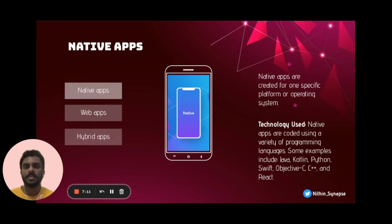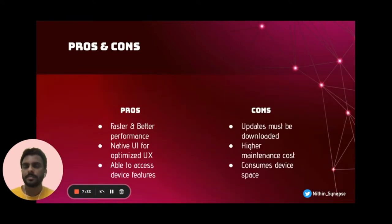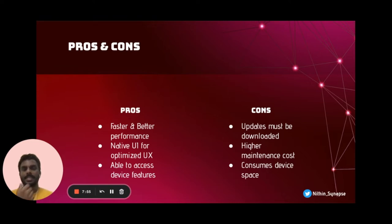Native apps are ones created for one specific platform or operating system. For iOS, the apps we download from the App Store are native apps. For Android, the apps downloaded from the Play Store are native Android applications. One important pro is that native apps are faster and better in terms of performance. However, whenever there is an update it has to be downloaded, and since the code base is different there is higher maintenance cost. Since it is installed on our mobile devices, it also consumes device memory space.